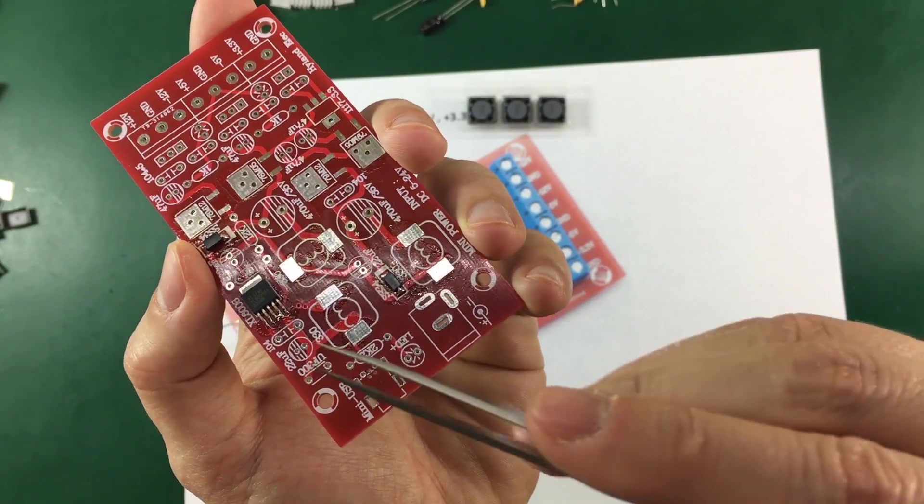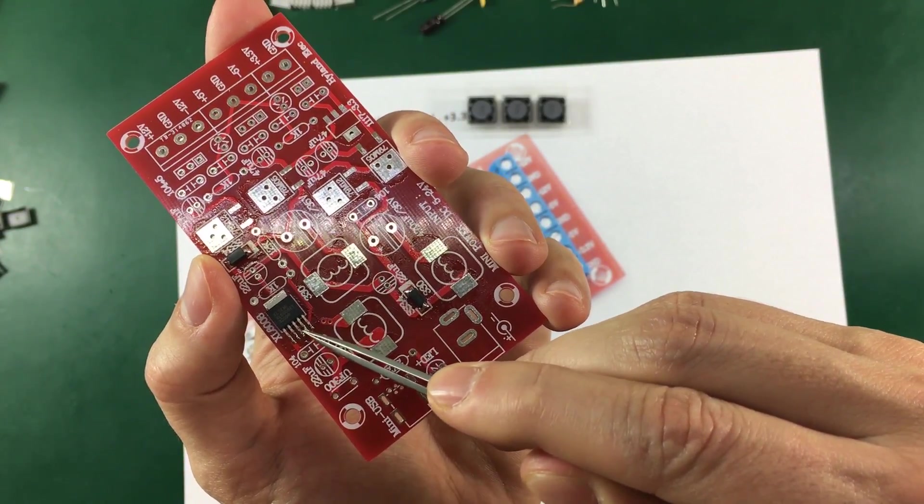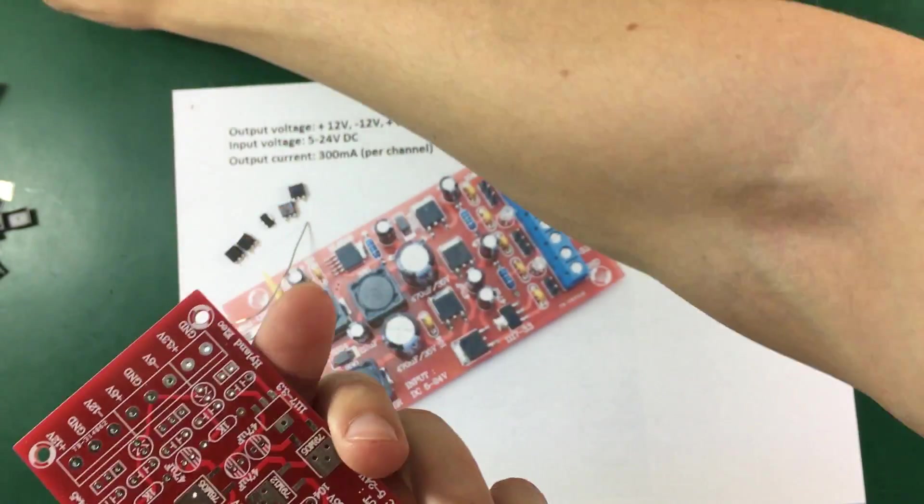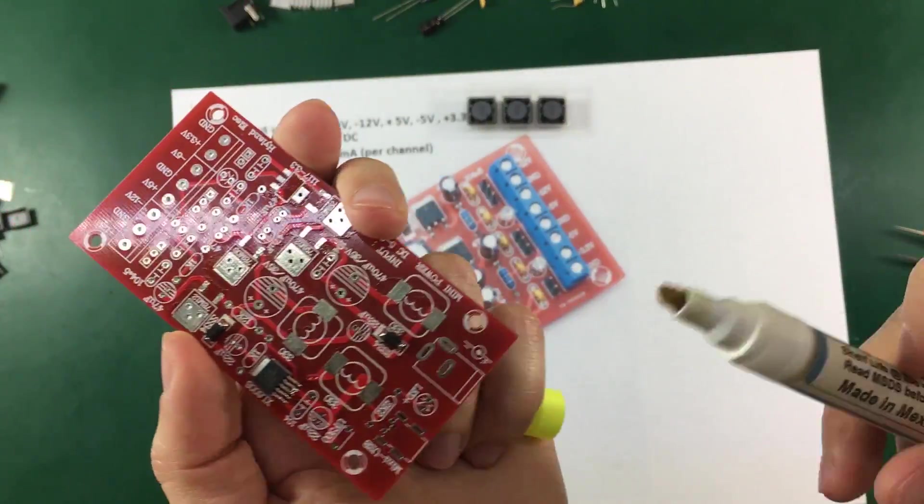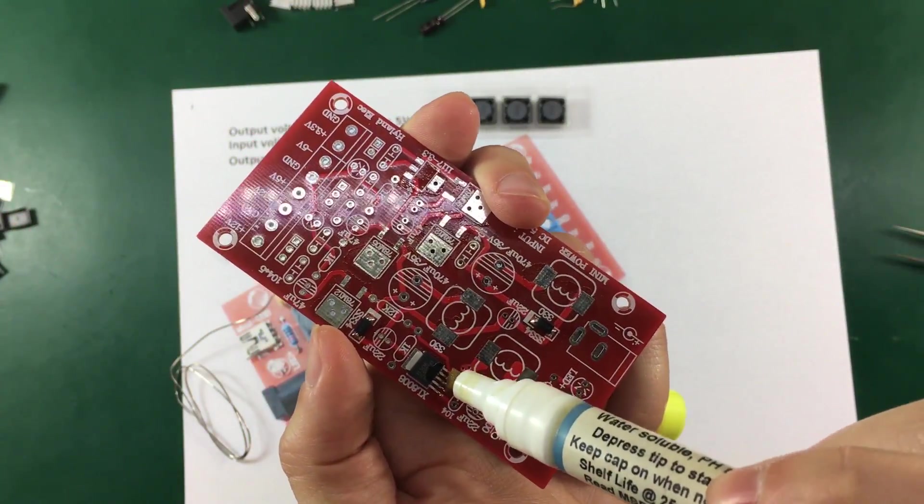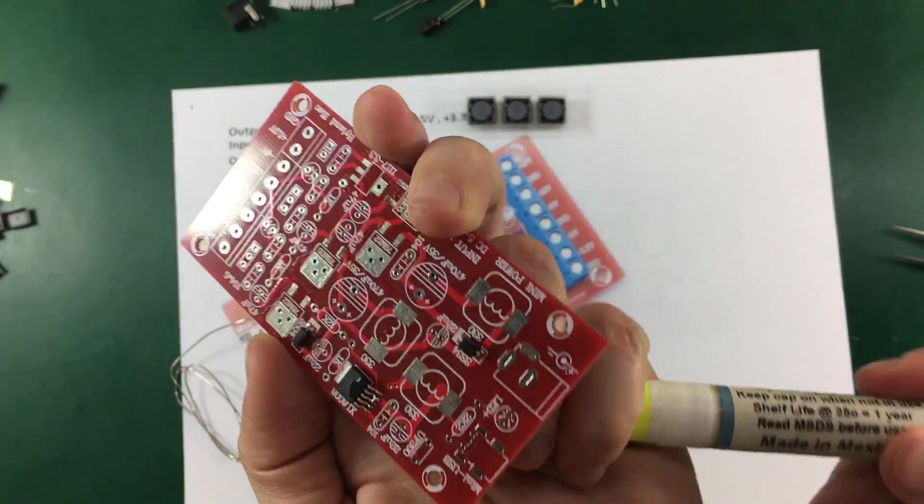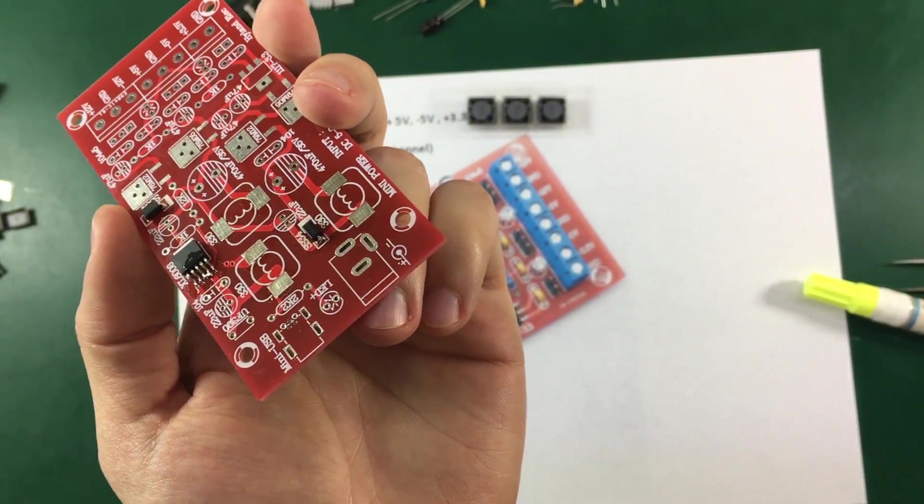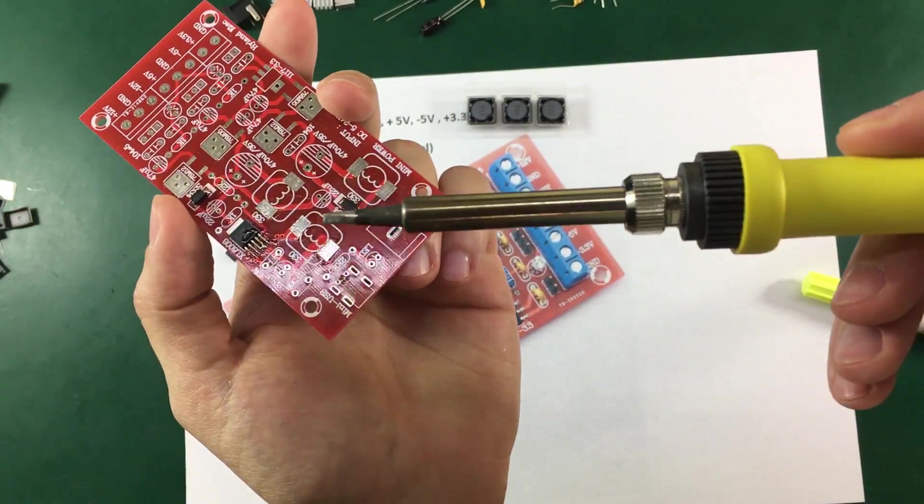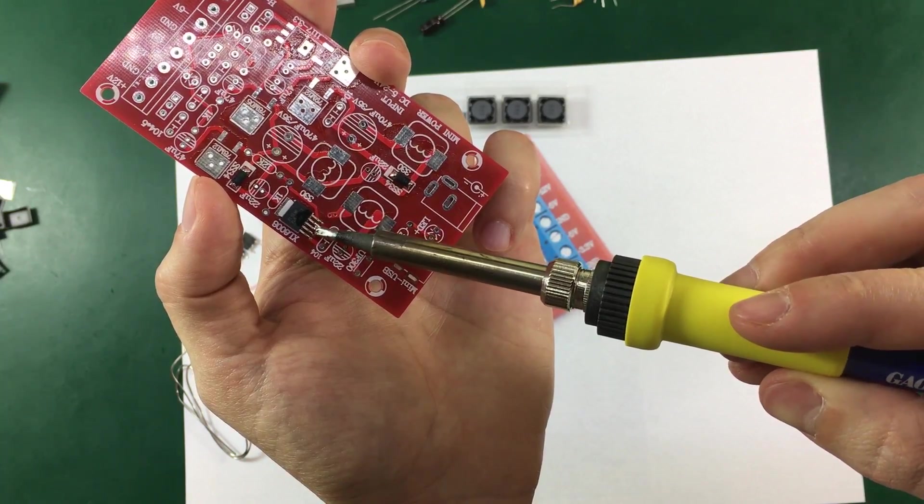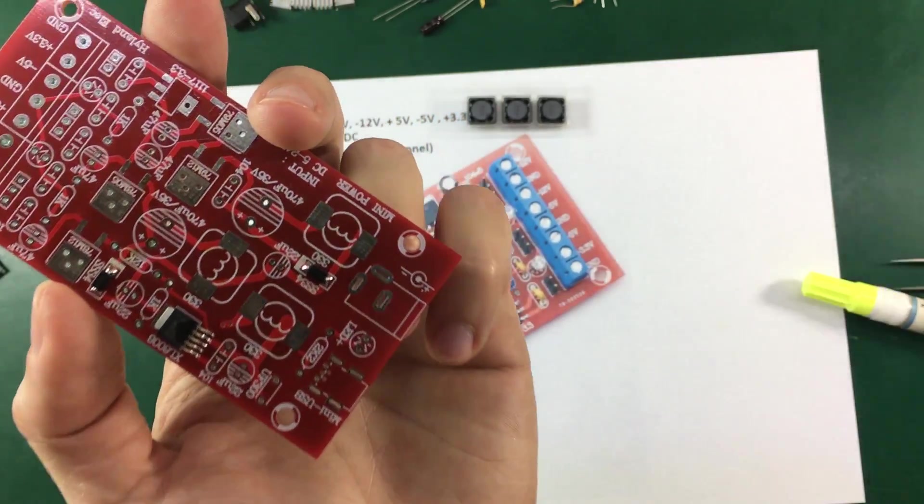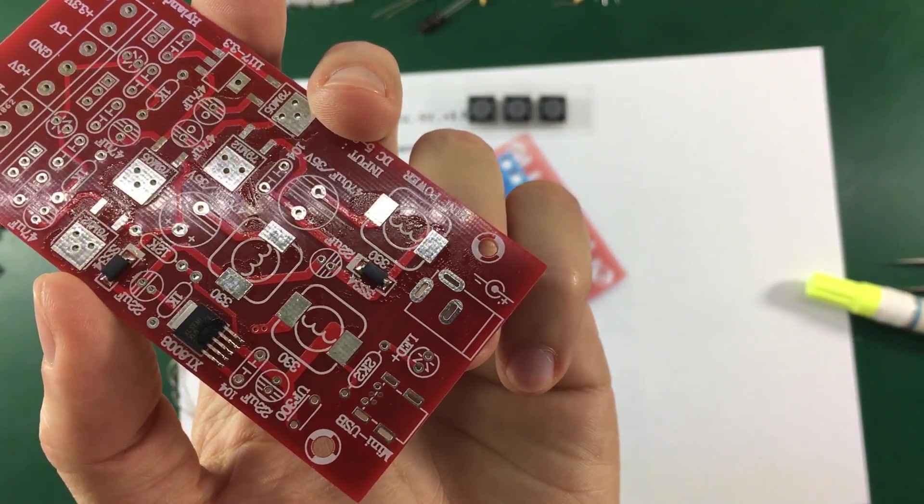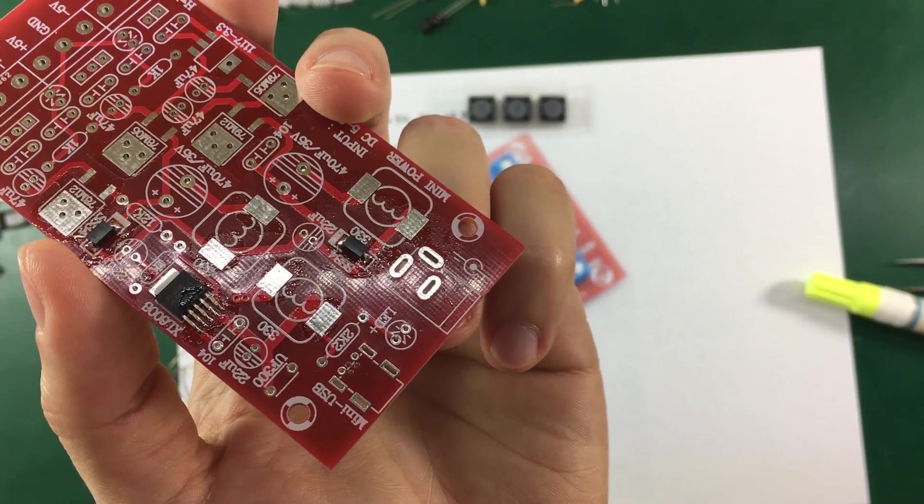As you can see I got a small solder bridge in between those pins but that can be easily fixed. I just need to add some more flux. And then with a clean soldering iron tip. There you go. The solder bridge is fixed.